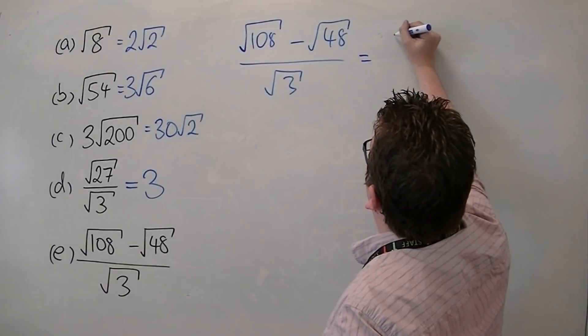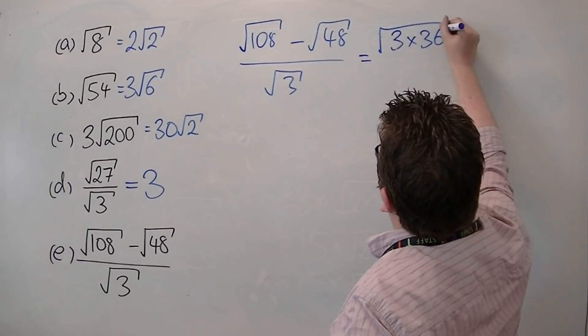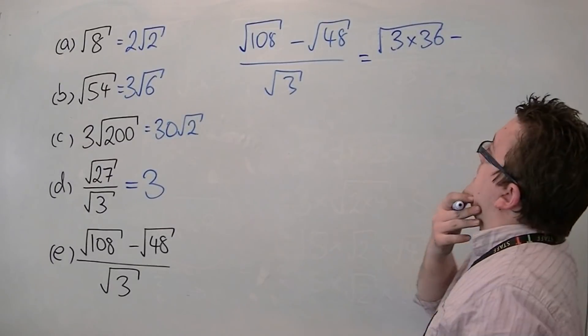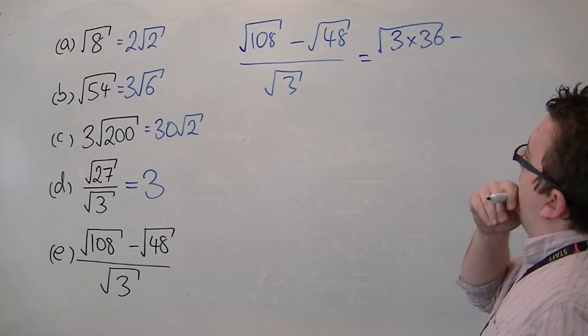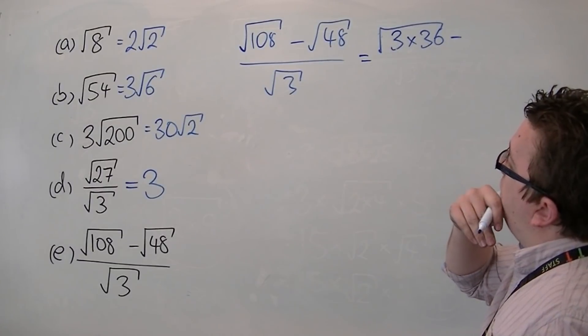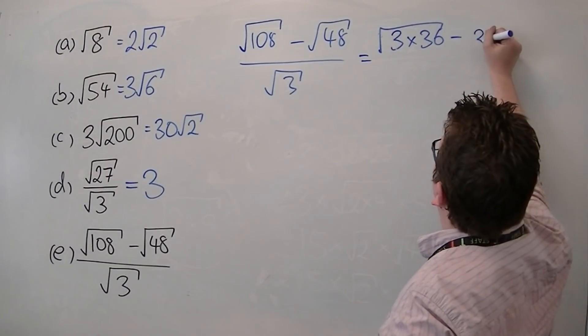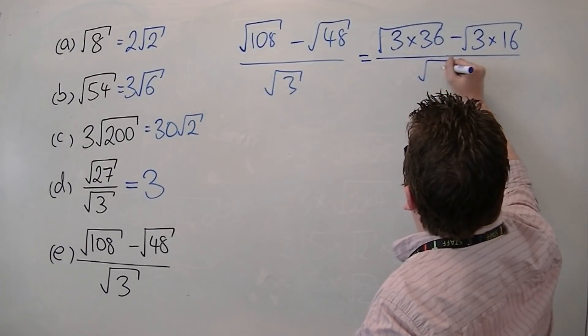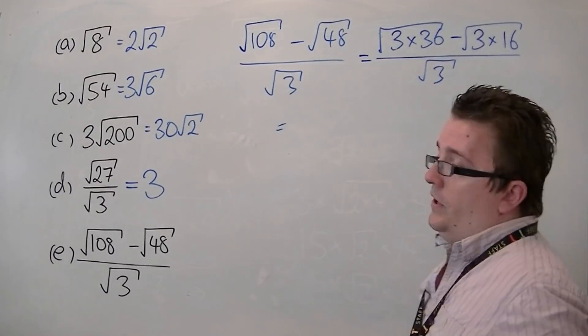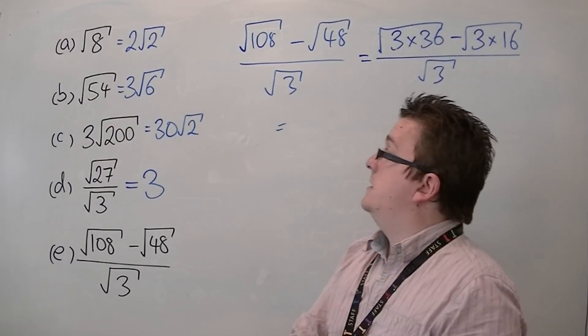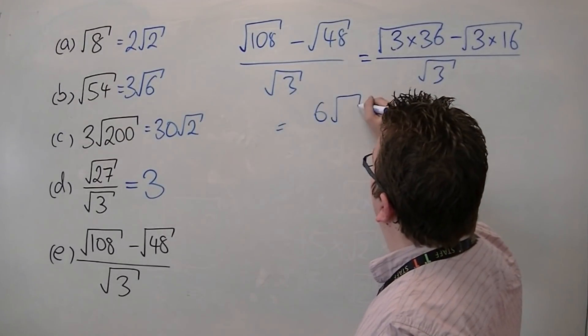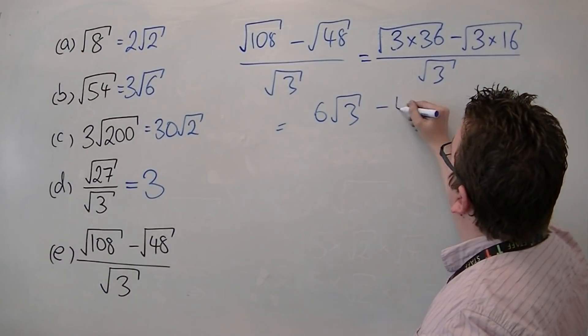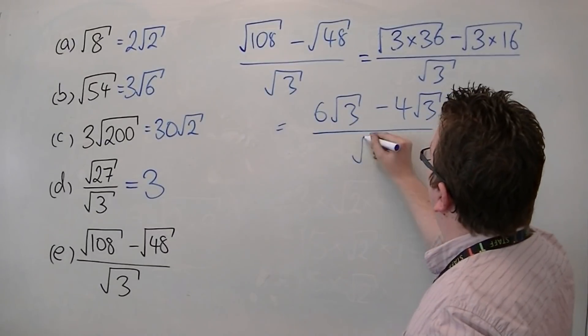So this is equal to 3 lots of 36 square rooted. And the 48, the number that goes into 48, we've got 16 goes in three times. So 3 times 16 square rooted, all over root 3. So we've got 3 times 36 square rooted. Square root 36 is 6, so we've got 6 root 3. Over here, we've got the square root 16, which is 4, so this is 4 root 3, all over root 3.